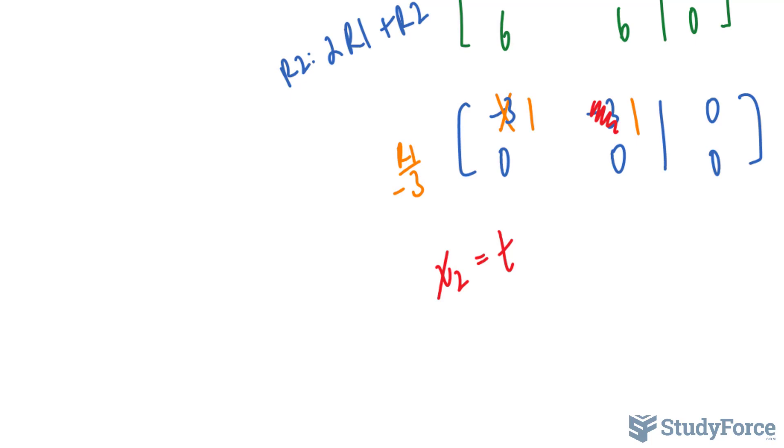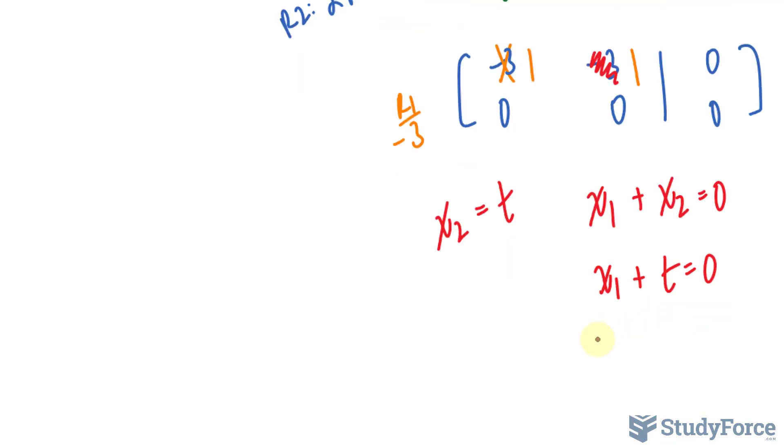By setting it as a parameter t, the first row is the equation x sub 1 plus x sub 2 equals 0. I'll replace x sub 2 with what I set it as, and I'll solve for x sub 1. I get negative t. This means that my eigenvector is the following: x sub 1 is negative 1, think of it as the coefficient of this, and for x sub 2, it's 1.